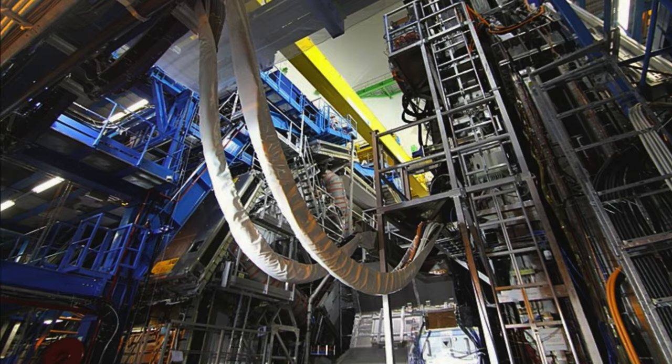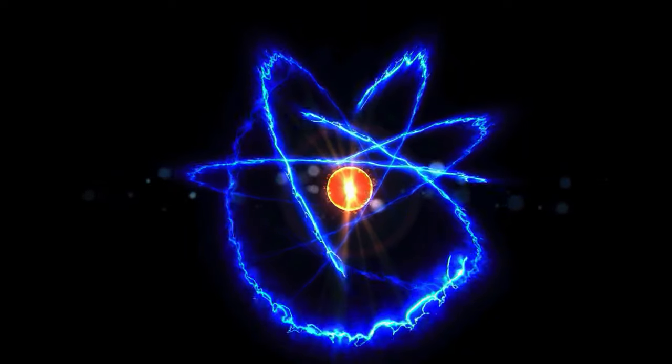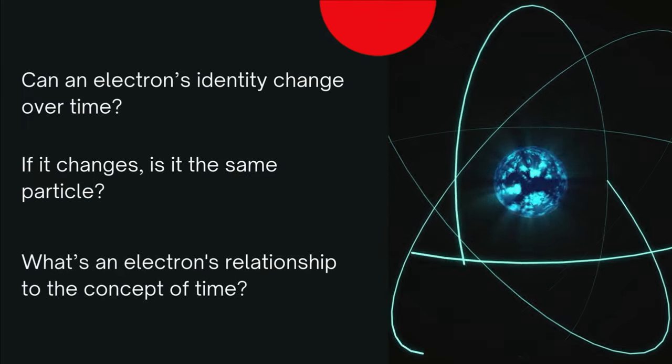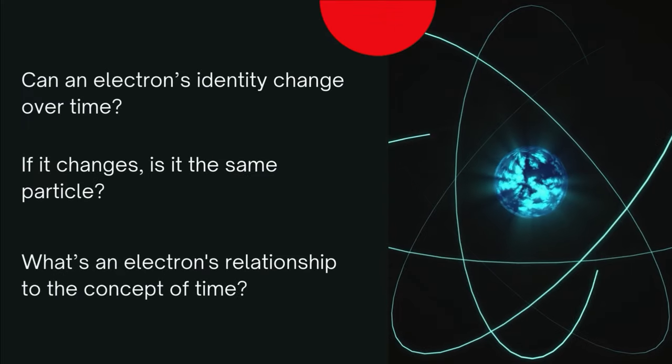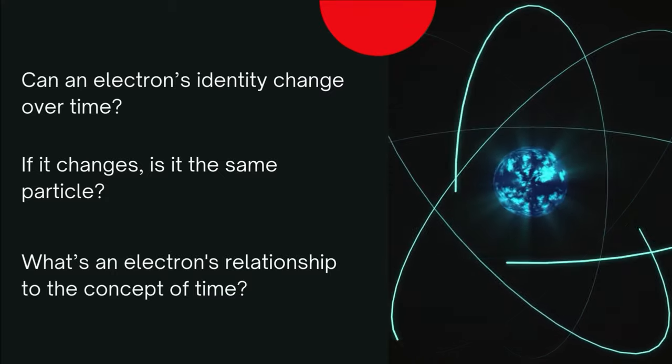Metaphysics relates to science as it continues asking why questions where science study leaves off. For example, a scientific theory is that electrons have a charge which can be tested. And that's where science ends. Metaphysics then enters and explores this topic in science asking things like, can an electron's identity change over time? If it changes, is it the same particle? What's an electron's relationship to, say, the concept of time?